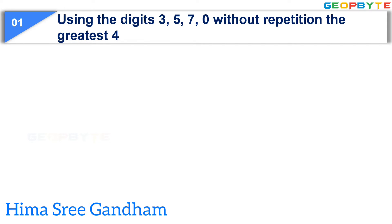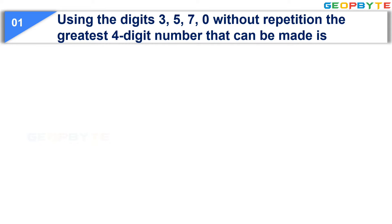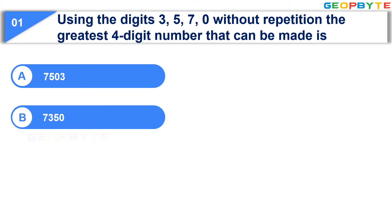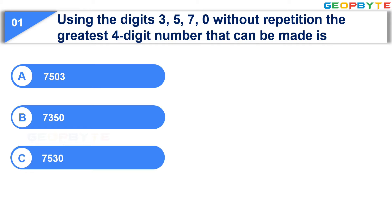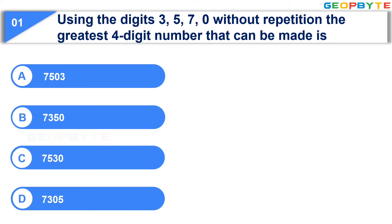The first question is: Using the digits 3, 5, 7, 0 without repetition, the greatest 4-digit number that can be made is — Option A: 7503, Option B: 7350, Option C: 7530, Option D: 7305. Your time starts now. Your time is up and the correct answer is Option C: 7530.